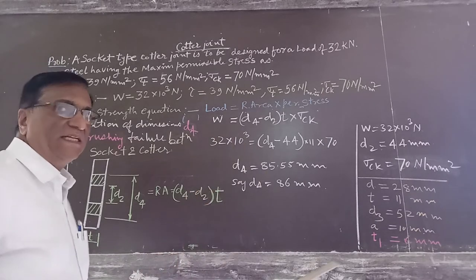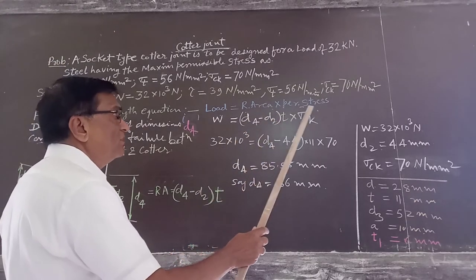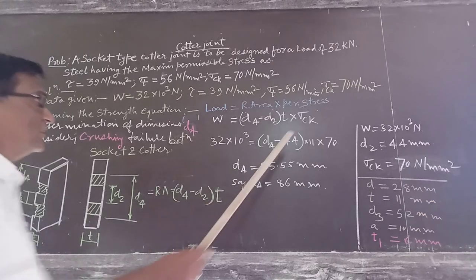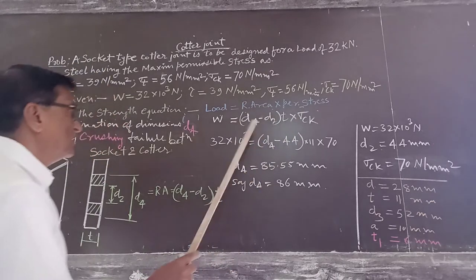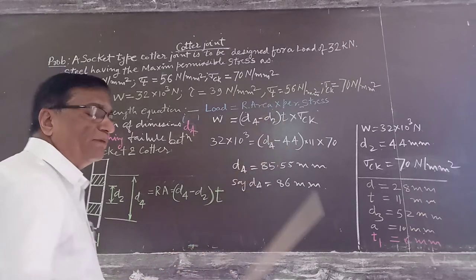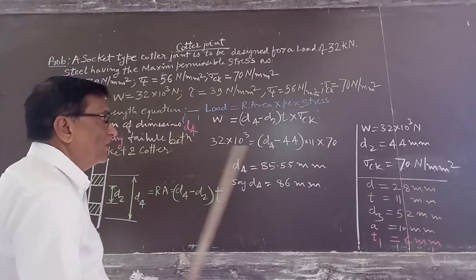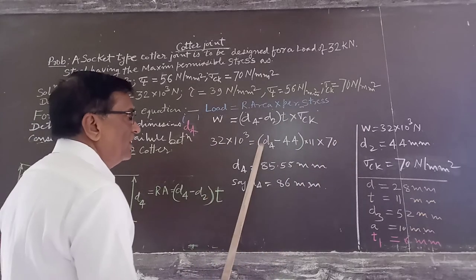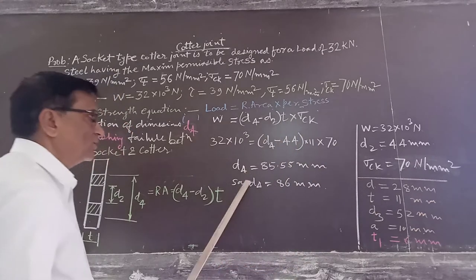We form the equation: load W equals resisting area multiplied by permissible stress. As the failure is in crushing, the permissible stress is the crushing stress. The resisting area is (D4 minus D2) multiplied by T. Putting the values of W, D2, and T — where T equals 11 mm.